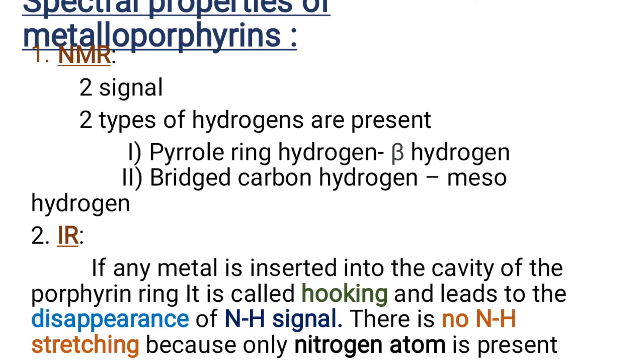Finally we will see spectral properties of metalloporphyrin. First, the NMR spectrum. In the complex we will have only two sets of protons. Hence we get two signals: pyrrole ring hydrogen, known as beta hydrogen, and bridged carbon hydrogen, known as meso hydrogen. We don't have the NH bond because the hydrogen is replaced by the central metal ion.